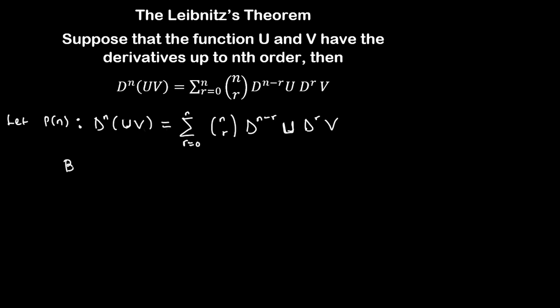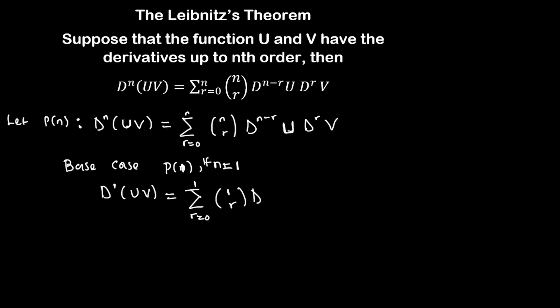Let's start with P of 1. For our base case we want to show that P(1) is true, that is when n equals 1. We are going to have this be the first derivative of u times v. Don't forget we are making the assumption that u and v have derivatives up to the nth order. So we have the summation of r from 0 up to 1 of C(1,r) times the (1−r)th derivative of u times the rth derivative of v.